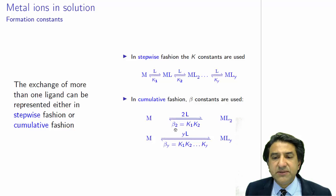Now it turns out that beta2 is the product of the first two K constants. And betaY, the formation constant for ML with Y ligands, is the product of the first KY equilibrium stepwise constants. I hope you know that. If you don't know it, we will do that exercise in class. See you later.